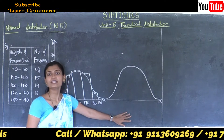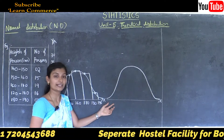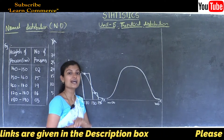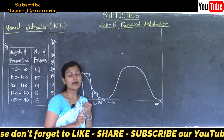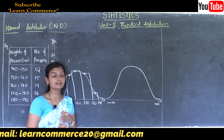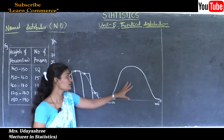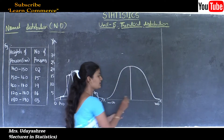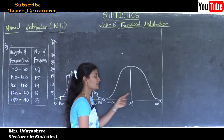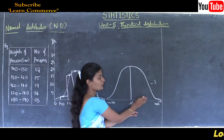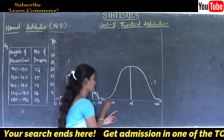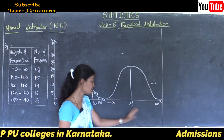Now, what are the properties of normal distribution? The range of normal distribution is from minus infinity to plus infinity, meaning it is uncountable. Examples include height of persons, marks obtained by students, and income of persons. This curve is symmetric about the mean, denoted by mu. The mean, median, and mode are all equal. The total area under the curve is equal to 1, with the right part of mu equal to 0.5 and the left part also equal to 0.5.